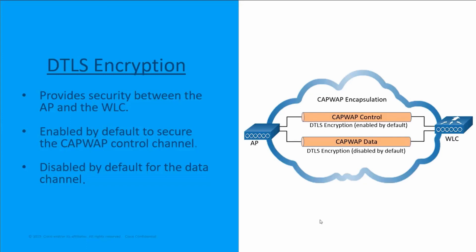DTLS is enabled by default to secure the control channel for CAPWAP. However, it is disabled by default for the data channel. This means all CAPWAP management and control traffic exchanged between the access point and the wireless LAN controller is encrypted and secured by default. However, data from the clients moving between an access point and the wireless LAN controller is not encrypted by default.